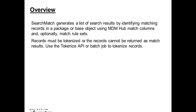Search match API generates a list of search results by identifying matching records in a package or base object using MDM Hub match columns. We can call the search match API with a match rule set or without one. If you are not using any match rule set, it will generate a match rule on the fly using field purpose and give equal weightage to all the fields.